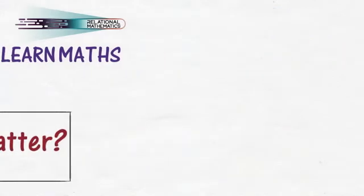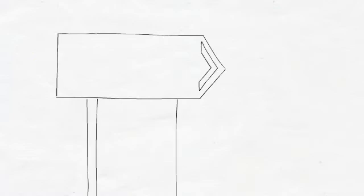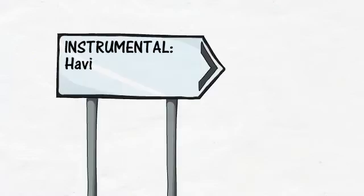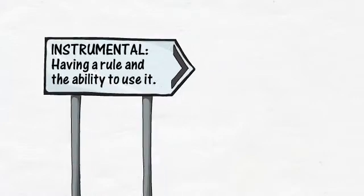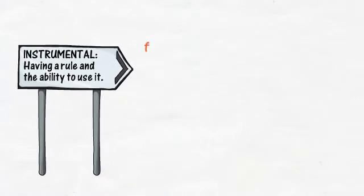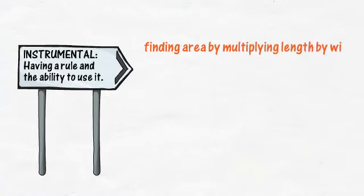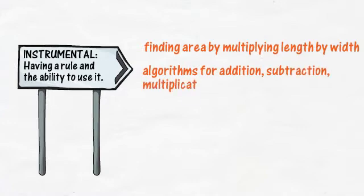One way of teaching and learning maths Skemp called instrumental. Instrumental means that we have a rule or a procedure — an instrument — and we have the ability to follow it. Examples of rules and procedures include finding the area by multiplying length by width, and algorithms for addition, subtraction, multiplication and division.